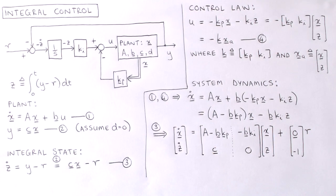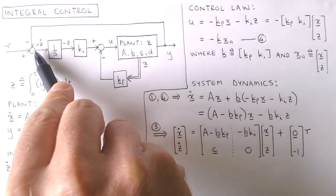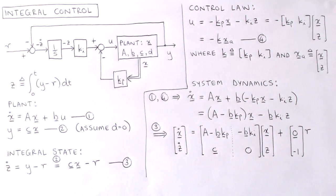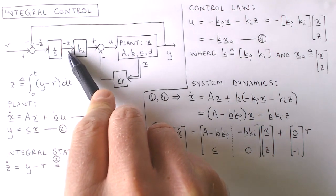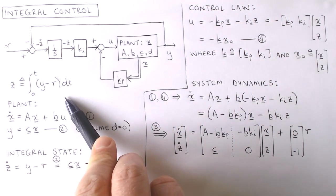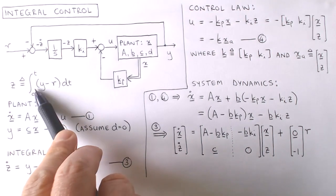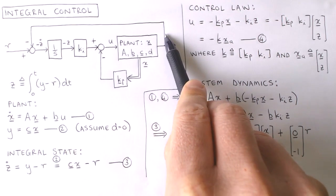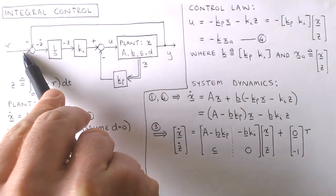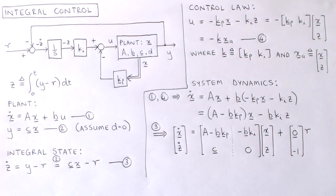By adding an integrator we have added another state to the system. Let's call this integral state z and label the output of the added integrator as minus z, so the input of the integrator is minus z-dot. The idea of integral control can be understood by looking at the definition of the integral state z. In steady state, the states of the system do not change, which now includes the integral state z. z would only be constant if the integrand y minus r is zero. If y minus r is zero, then the plant output y would be the same as the reference input r, which means that the plant output tracks the reference input exactly in steady state.